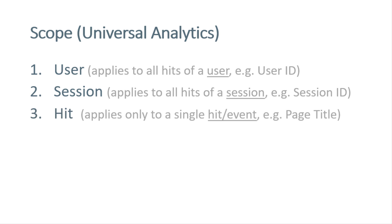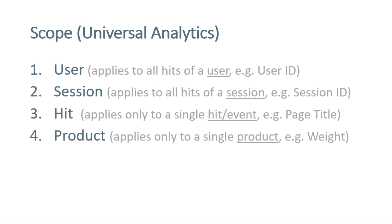A third scope is hit. This applies only to that particular hit with which the dimension was sent. For example, page title is a hit-scoped dimension because when a visitor goes to another page, the value changes. Other examples of hit-scoped dimensions are button ID, event category, or form ID. The last scope in Universal Analytics is product — if you're tracking purchases, you can send additional product-scoped custom dimensions with each product, such as product weight or product color.